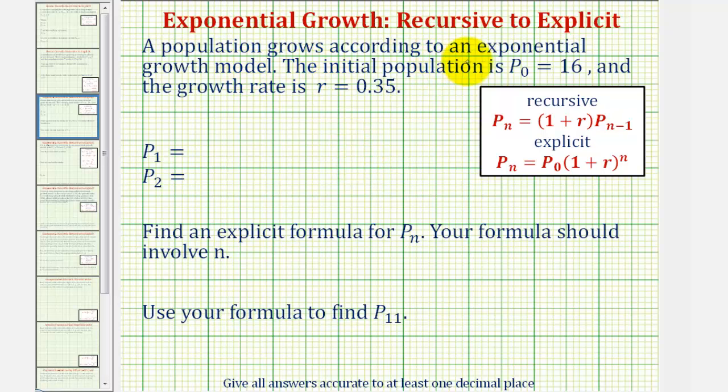A population grows according to an exponential growth model. The initial population is p sub zero equals 16, and the growth rate is r equals 0.35, which means the growth rate would be 35%.